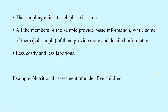The sampling units in each phase are the same. All the members of the sample provide basic information, while some of them — that is the subsample — provide more detailed information. The baseline information is achieved by interviewing or examining the whole sample, and we gather the baseline information from all of them. After that, when additional information is needed, we look for it from the subsample. This method is less costly and less laborious.